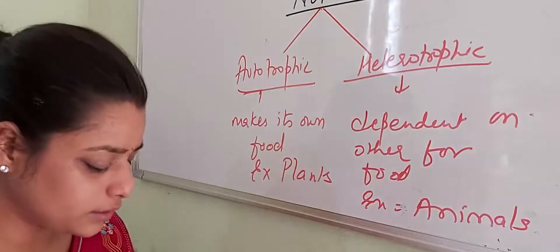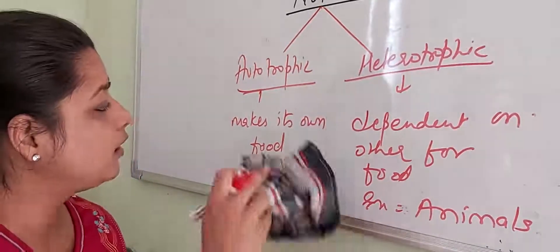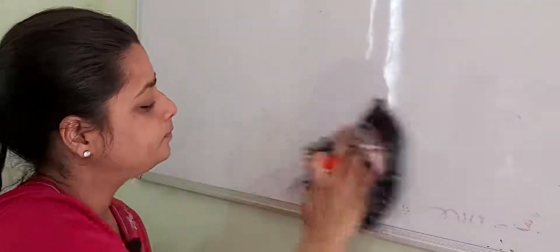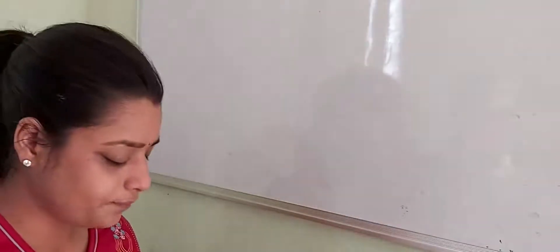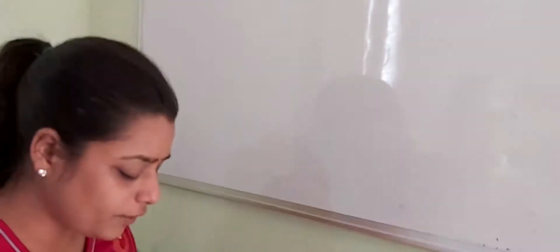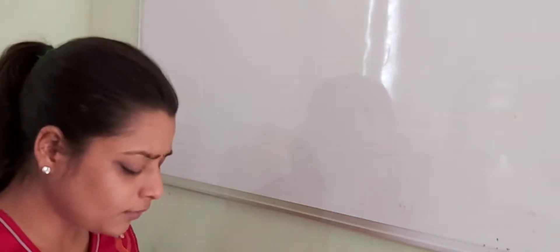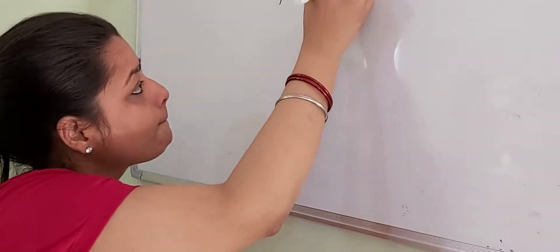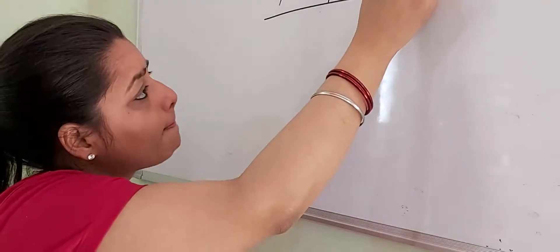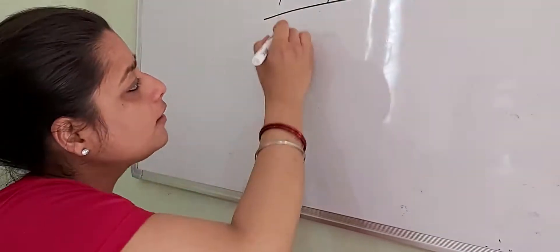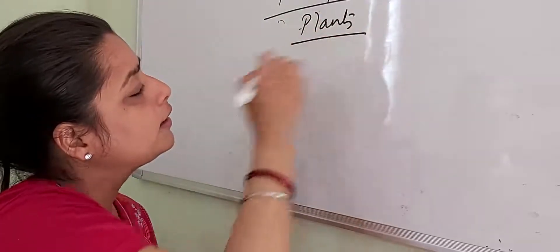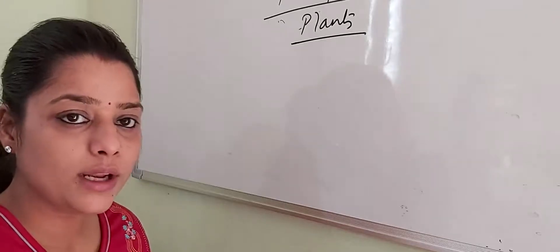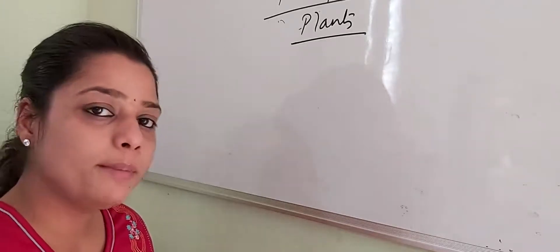Now when we talk about autotrophic in detail, we talk about plants. How do they make food? The autotrophic ones are plants. They have special pigments which help in making the food. If they don't have that organelle or those pigments, they cannot make food.